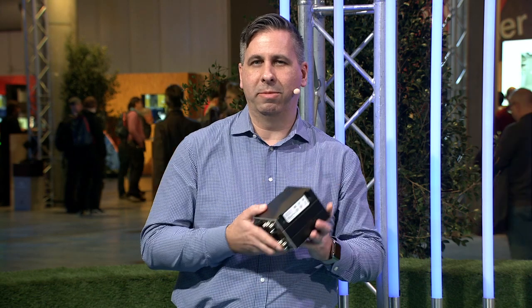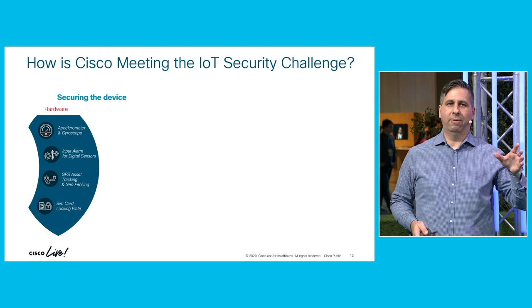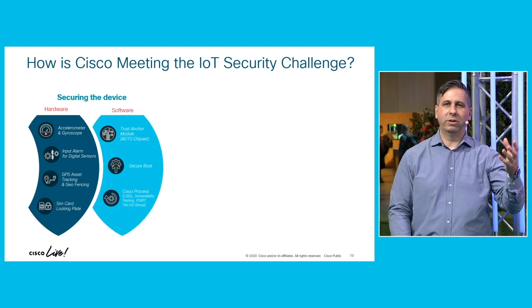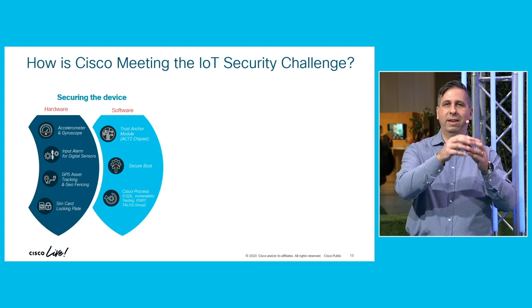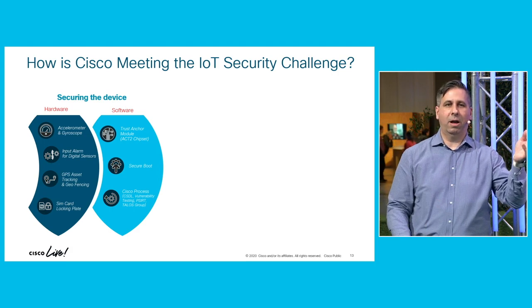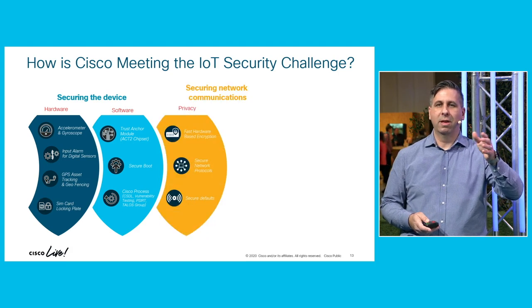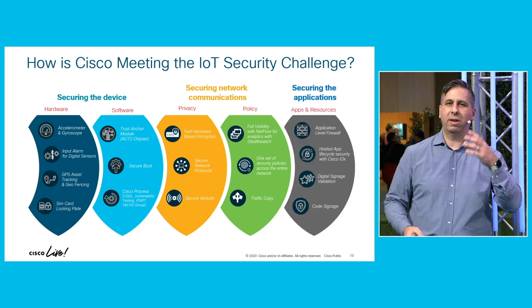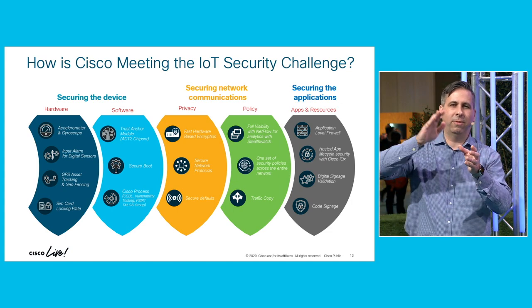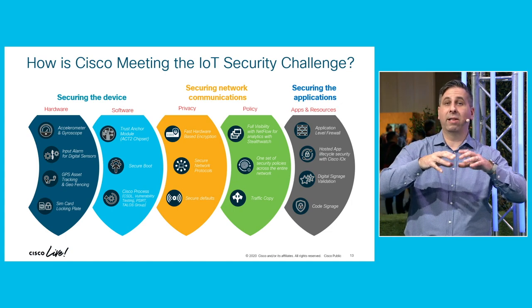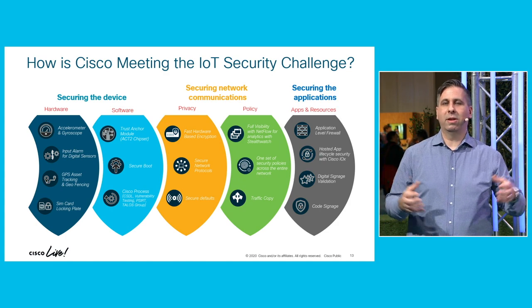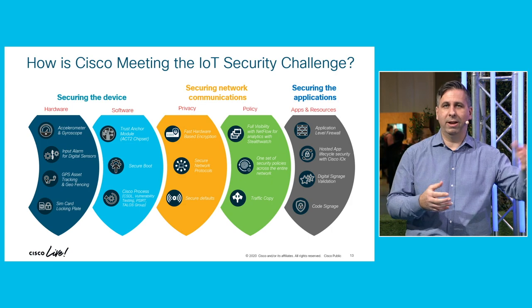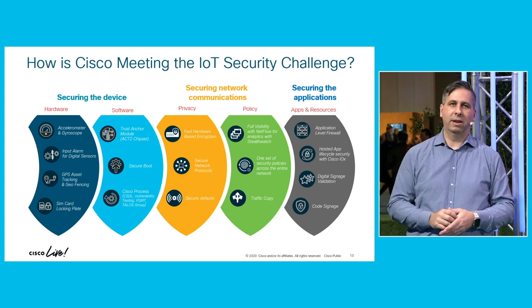These platforms all have compute capabilities as well. We secure the device at every single level — at the mechanical hardware level, we have anti-counterfeiting chipsets that prevent even software from being tampered with. We also secure all communications using encryption like MACsec or IPsec depending on the platform, and secure all applications. We also have a new security product called Cisco CyberVision that secures the entire industrial control system.